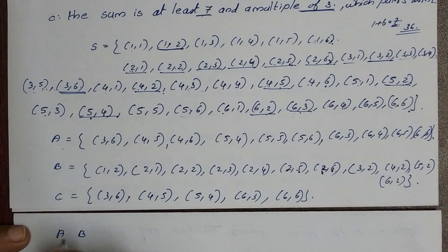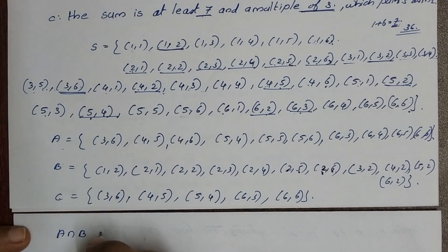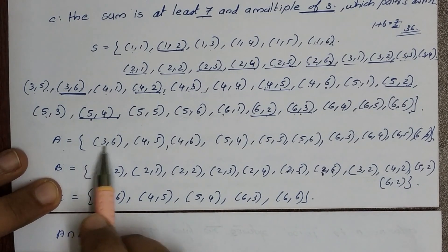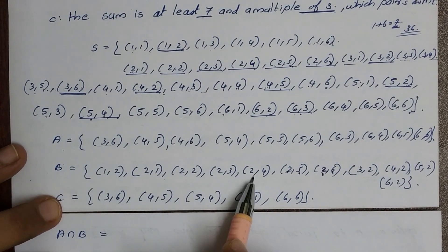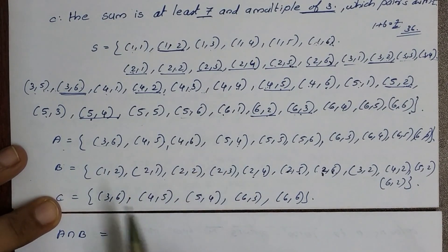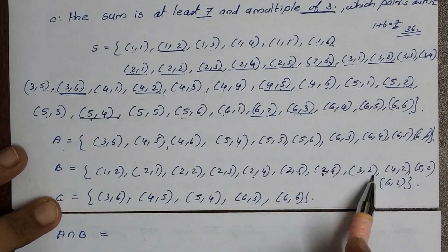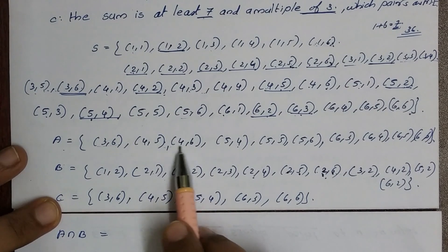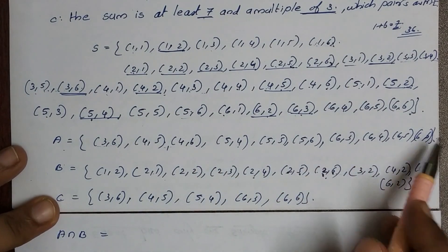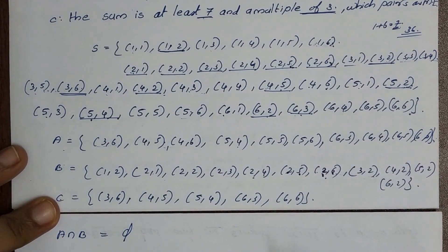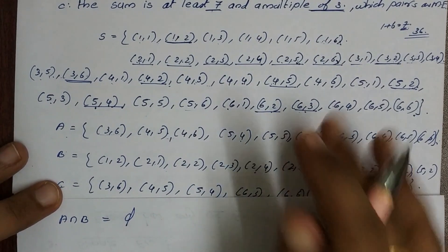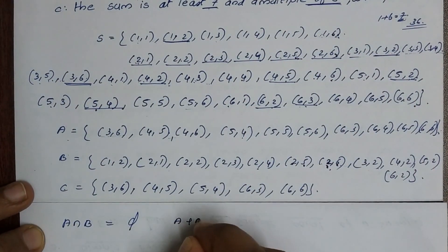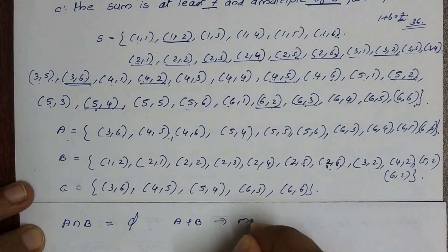Now we check which pairs of events are mutually exclusive. A intersection B: checking common elements between A and B. Since none of the pairs in A (sum > 8) include a 2 on either die... actually there is (2,?) overlap, so A intersection B is not the null set. Wait — A and B do share elements, so we check carefully. A intersection B equals null, meaning A and B are mutually exclusive.